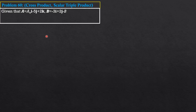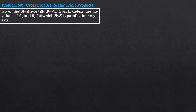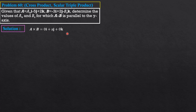Still on the application of cross product and scalar triple product. Given A = Ax·I − 5J + 2K and B = −3I + 2J − Bz·K, determine the values of Ax and Bz for which A cross B is parallel to the Y-axis. If A cross B is parallel to the Y-axis, only the J component has a value, meaning the I and K components must equal zero. So A cross B has the form 0I + E·J + 0K.